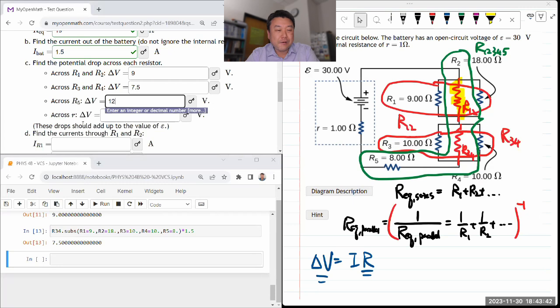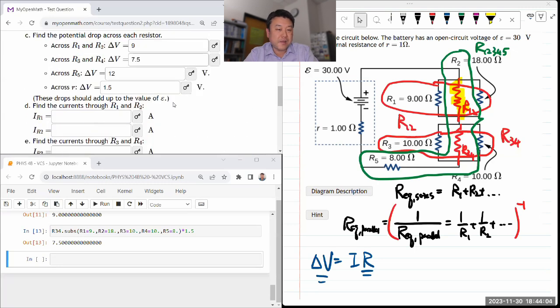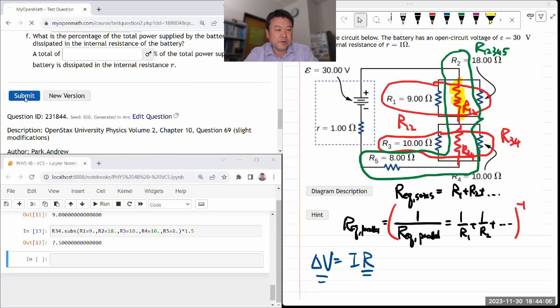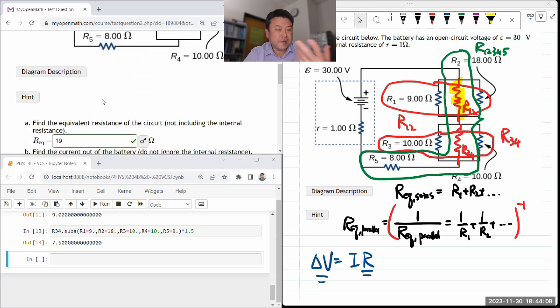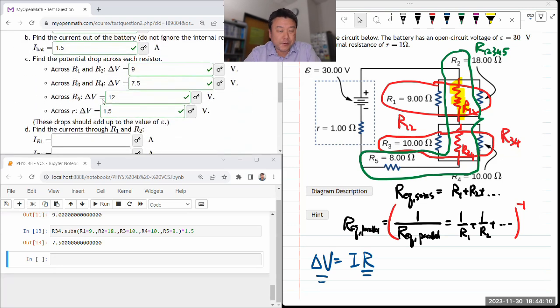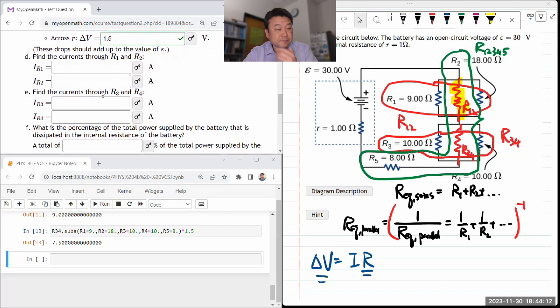And double check, oh wait, across R, I still need that. So 1 ohm, so that's going to be 1.5. So the double check is when you add these all up, you should get 30 back from Kirchhoff's loop rule. So let's see, 9 plus 16.5, 28.5, yeah, 30. Okay, so they should be all right. Oh yeah, they should have added to the value of epsilon or the electromotive force or the voltage of the battery.